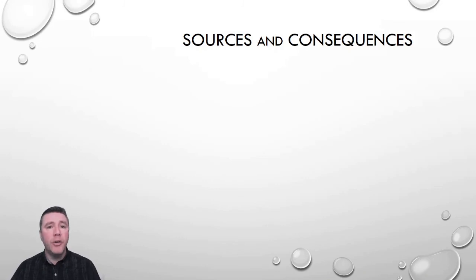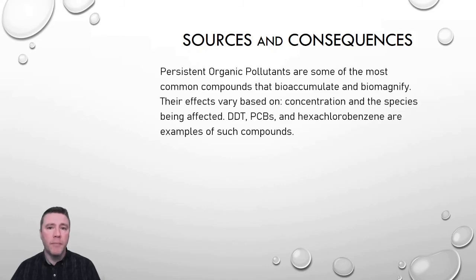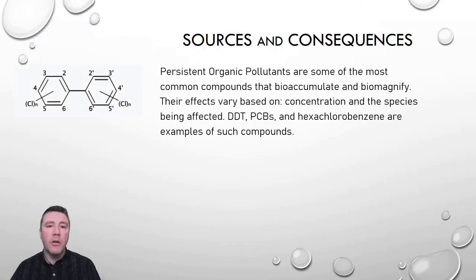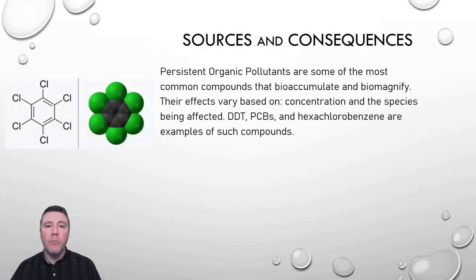Some of the most commonly bioaccumulated and biomagnified compounds include some of the POPs we saw earlier. Their effects vary based on the concentration present in the environment and the species being affected. Thanks to Rachel Carson, we know that DDT weakens the shells of birds' eggs — it's a carcinogen and an endocrine disruptor. Polychlorinated biphenyls are mutagens, which can lead to mutations in DNA; they can also cause developmental or birth defects and damage the liver. Hexachlorobenzene is a carcinogen, especially of the liver and kidneys, and it's particularly toxic to aquatic organisms.